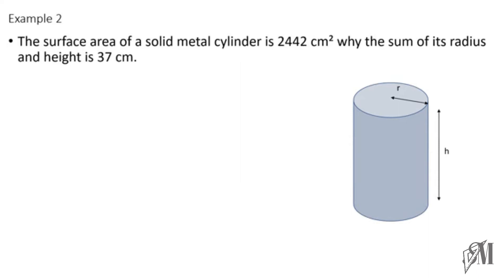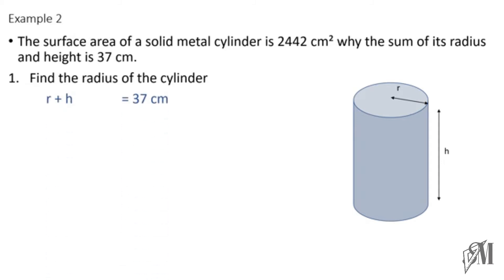The next example: the surface area of a solid metal cylinder is 2442 cm². The sum of its radius and height is 37 cm. We need to find the radius. Taking r and h as the radius and height, we write r + h = 37 cm, and the total surface area = 2πrh + 2πr² = 2442 cm².